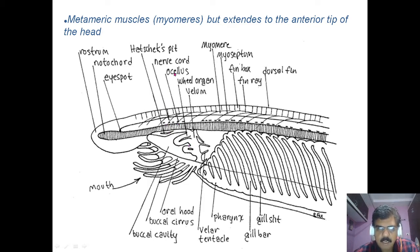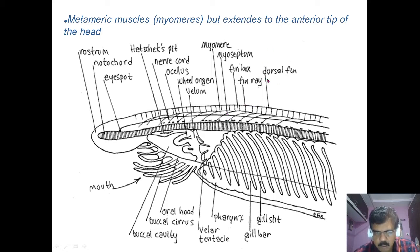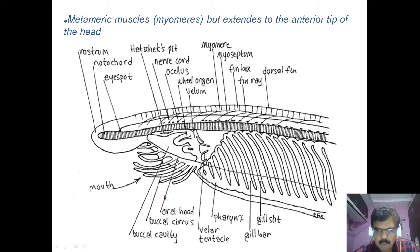The nerve cord is present just above the notochord, and the muscles called myomeres are present. The muscle-separating structures are called myosepta, and there are fin rays. The dorsal fin and other fins are unpaired. The mouth is on the ventral side and it has oral cirri or buccal cirri, which lead into the buccal cavity.